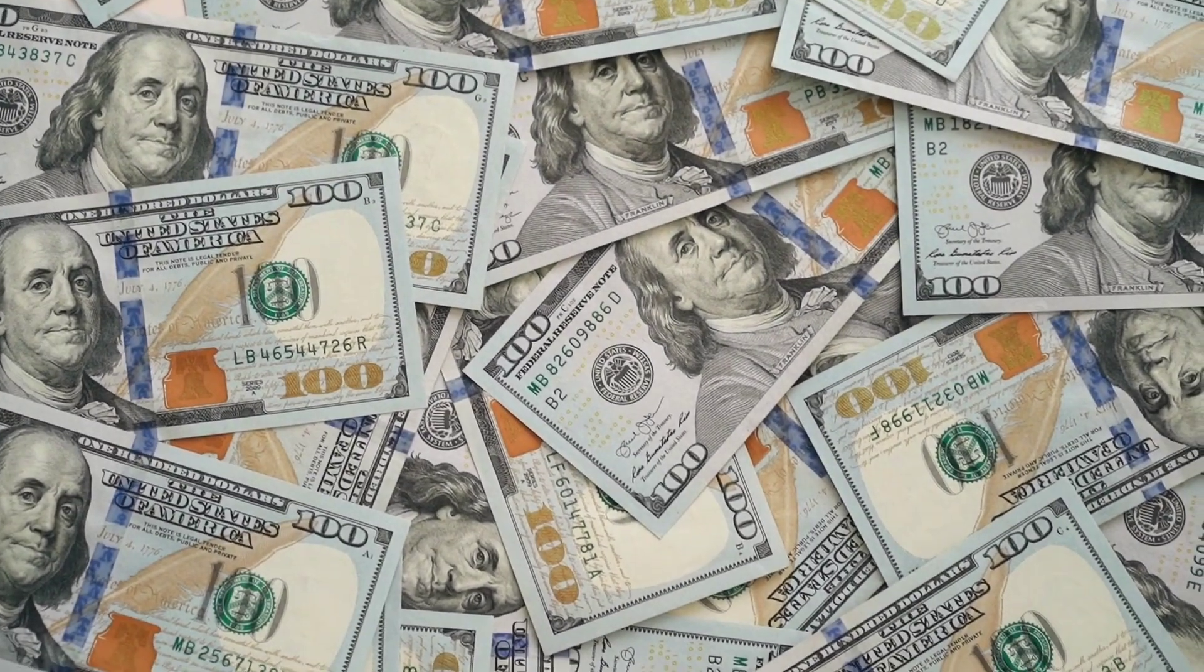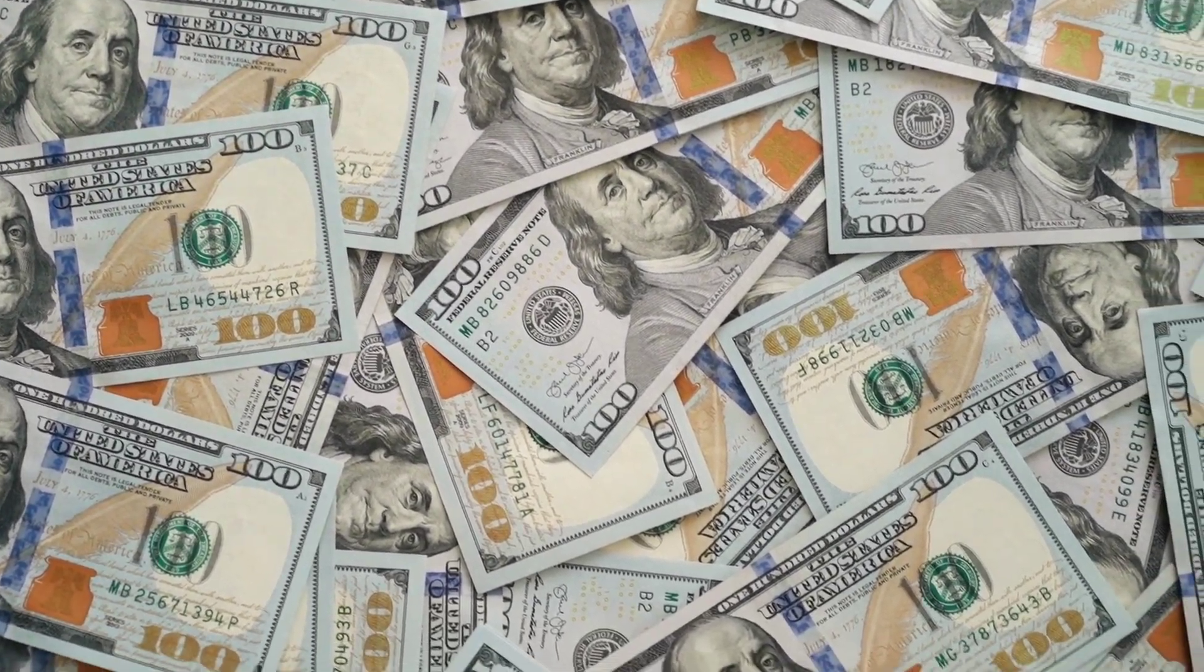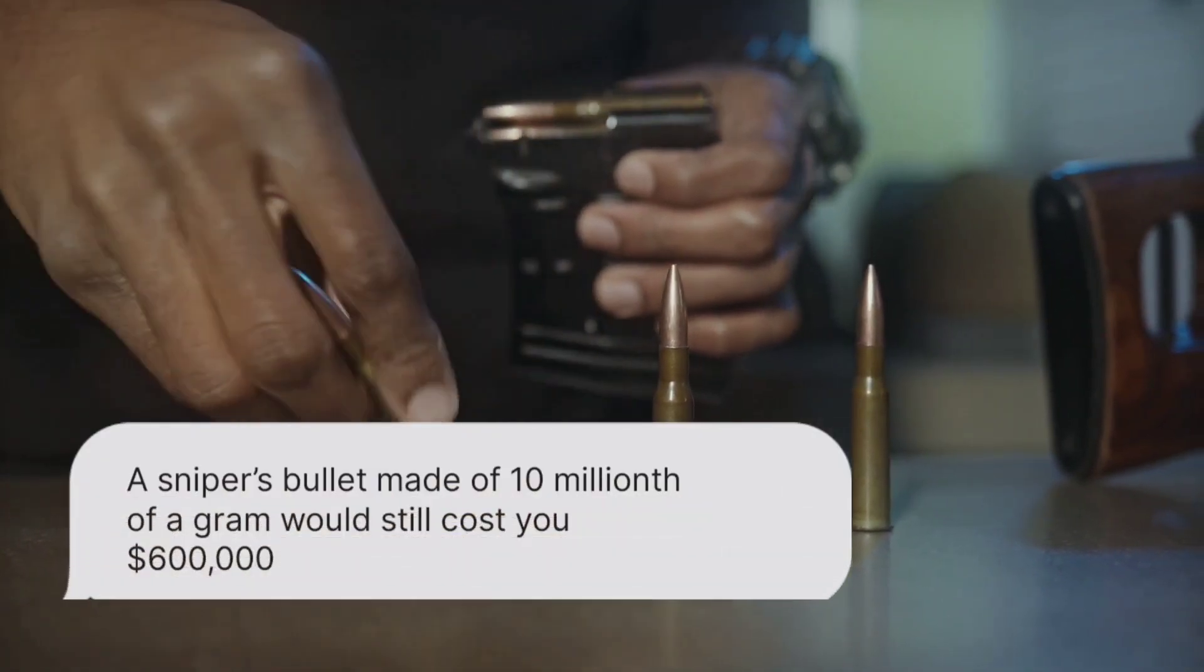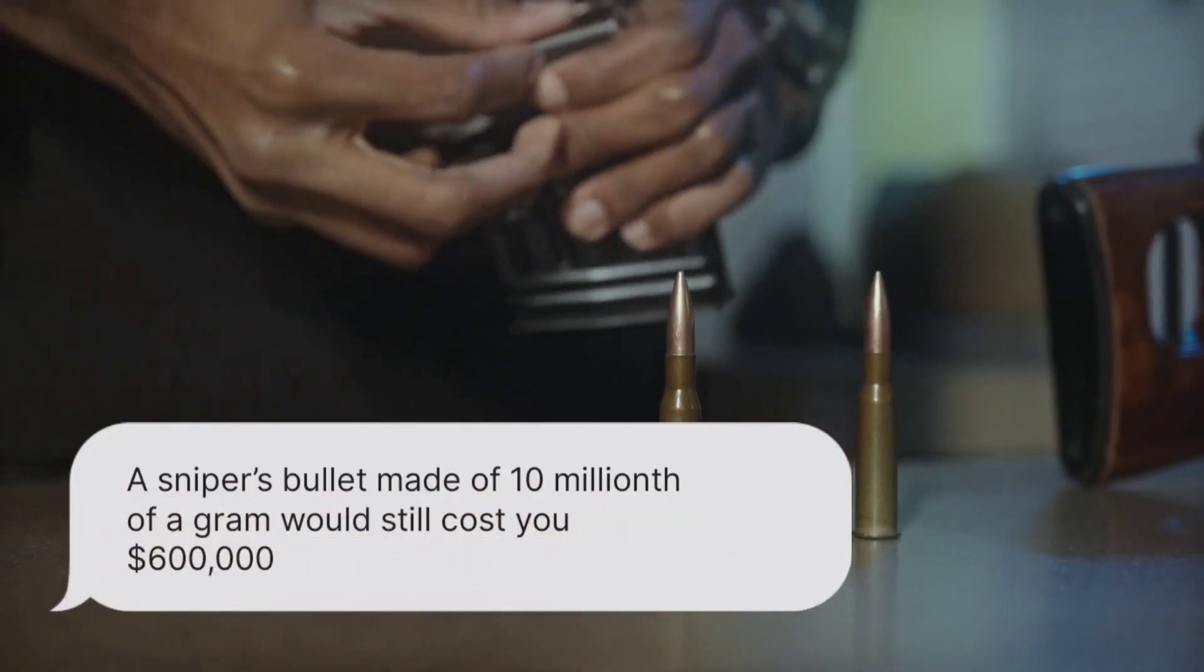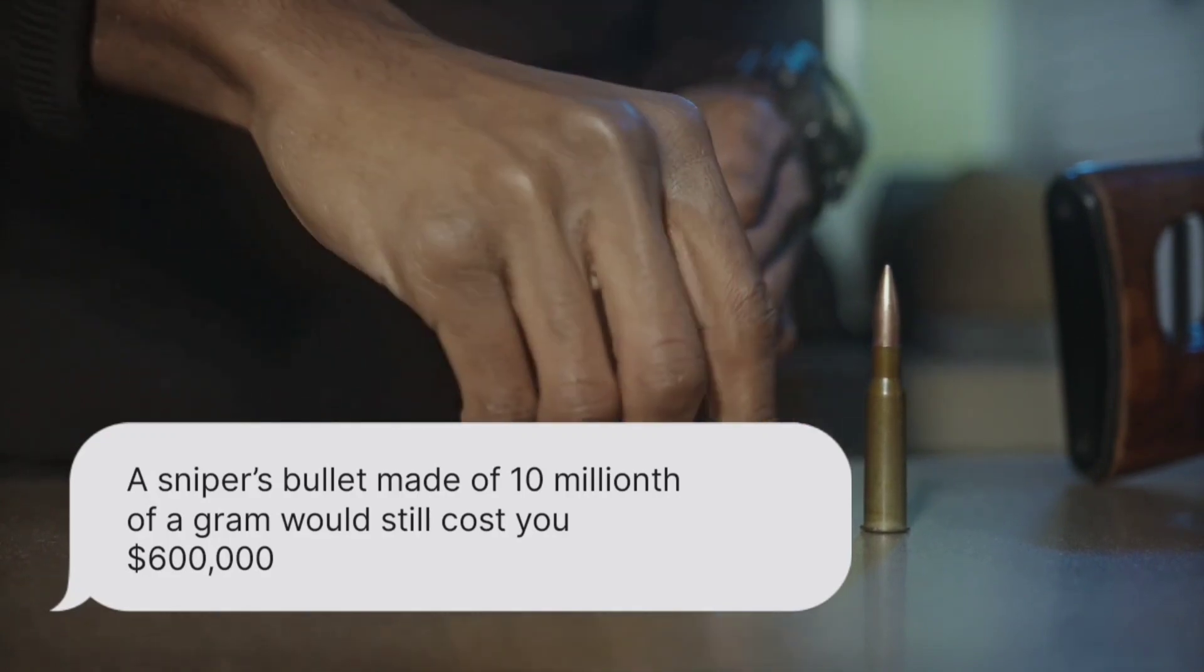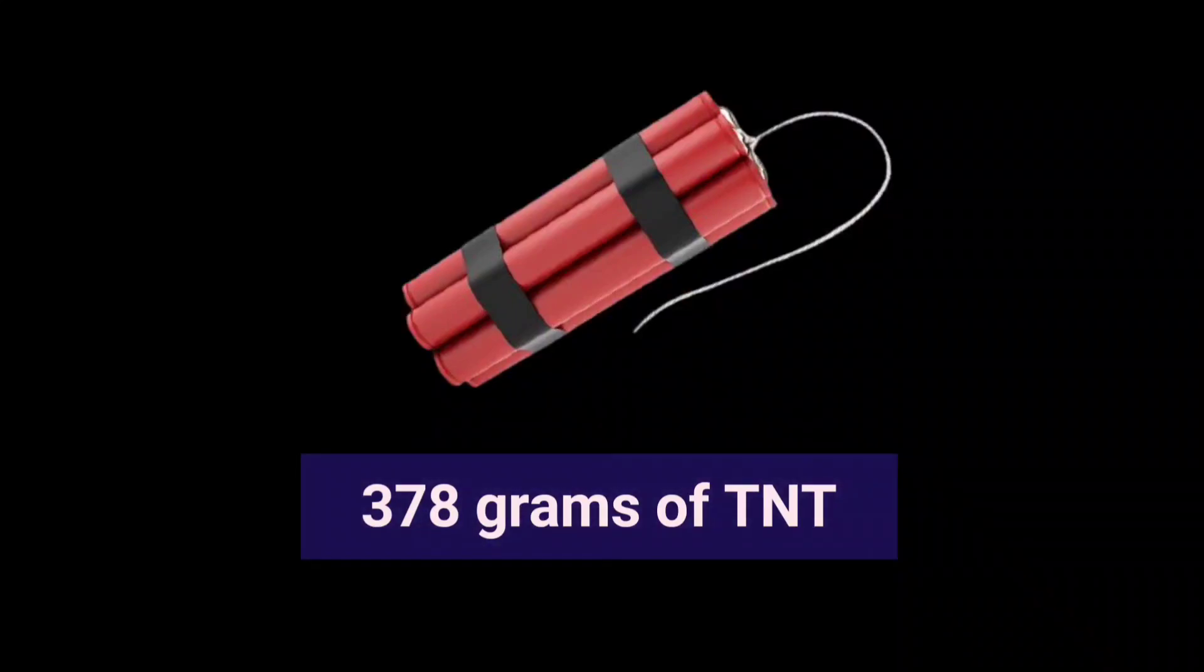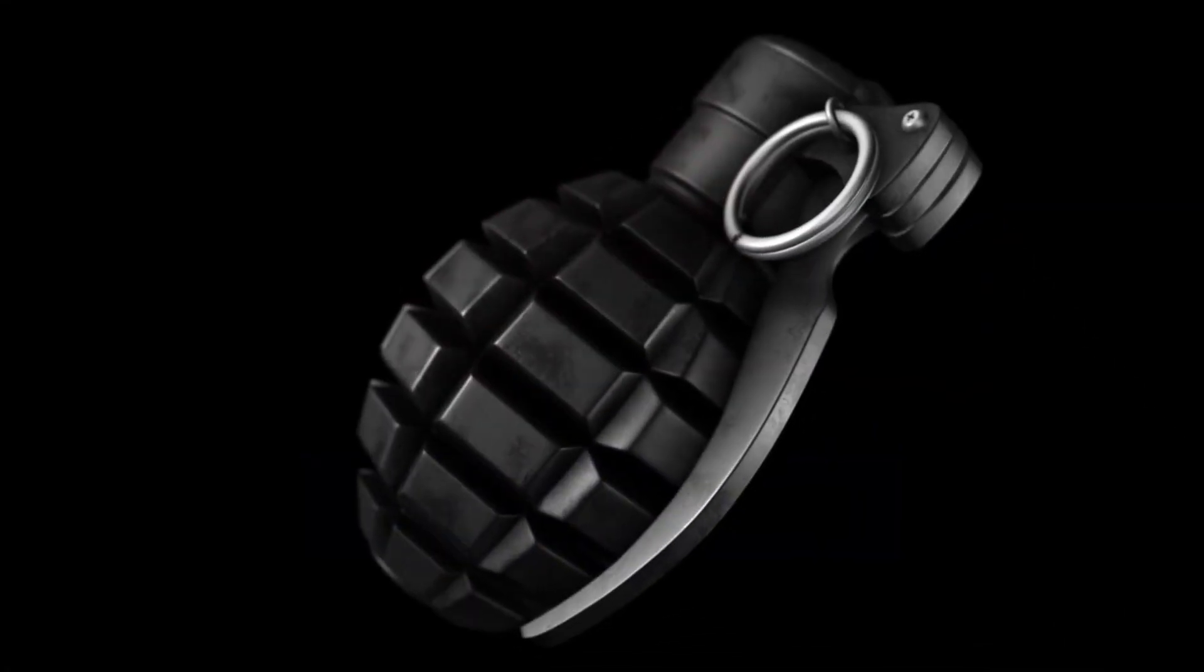We have all of the technology required to create such a device today. However, what's stopping us is money. To put it into even finer perspective for you, a sniper's bullet made of ten millionth of a gram would still cost you $600,000. This one bullet would be equivalent to 378 grams of TNT, which is more powerful than a modern-day grenade.